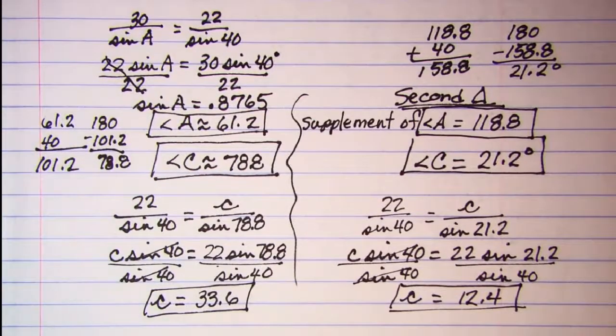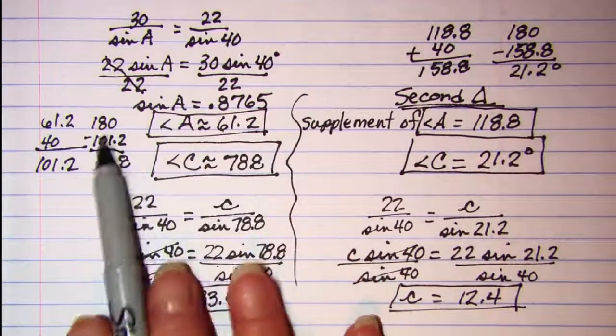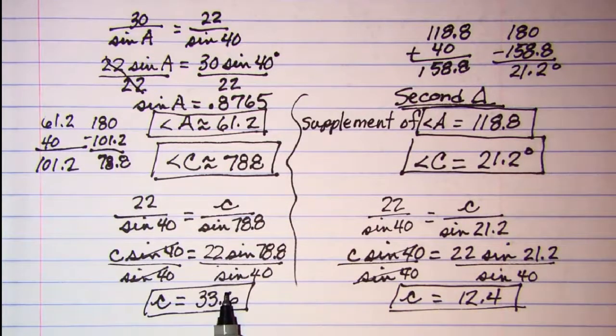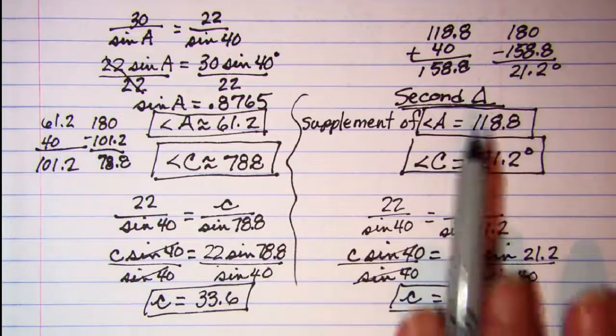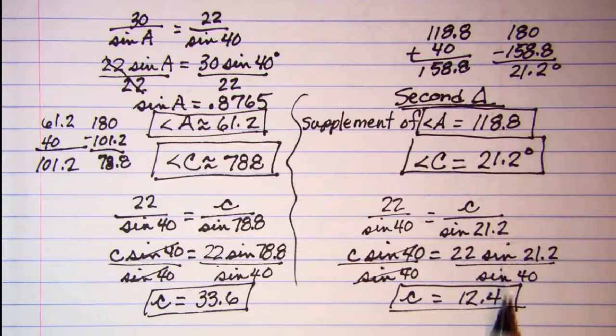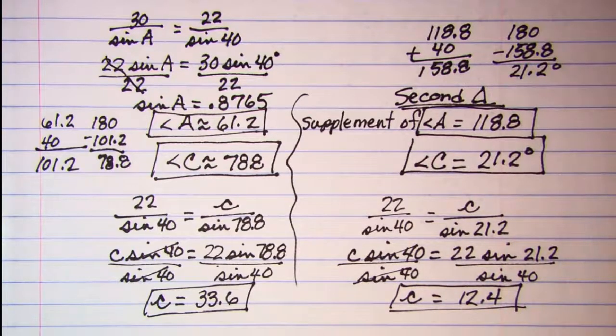So on the left side is the information for our first triangle, and on the right side is the information for our second triangle. Thank you.